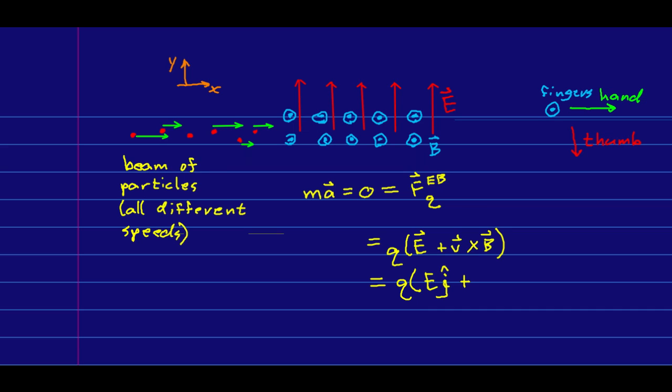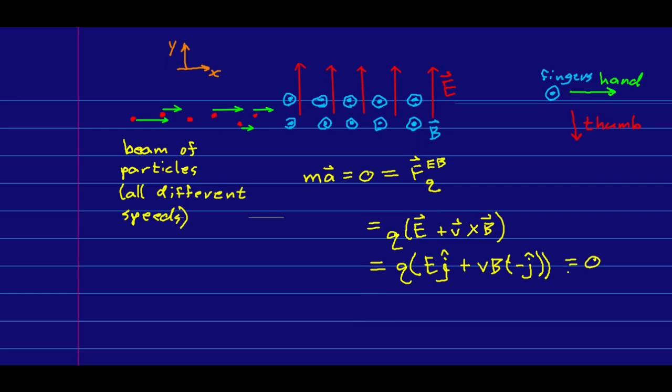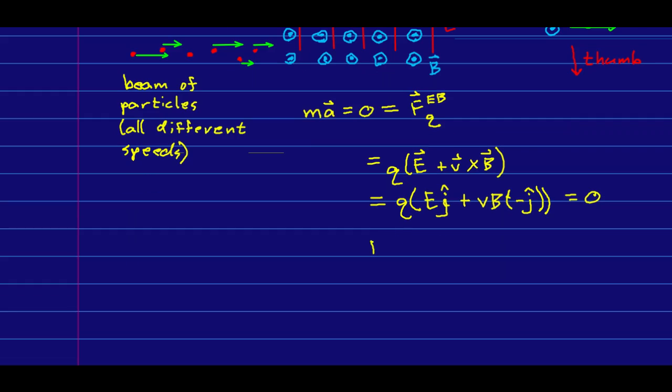Note that v and B are perpendicular, and so the cross product's sine theta is just one, and so I can just write this as vB, and I know it is in my negative y direction. And I want that all to be zero. And so that simply means that...